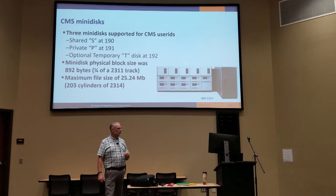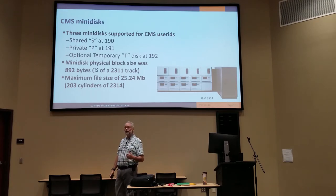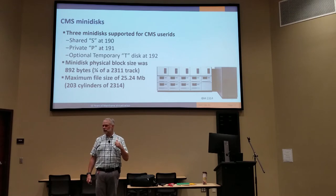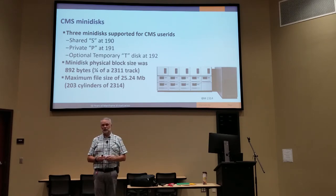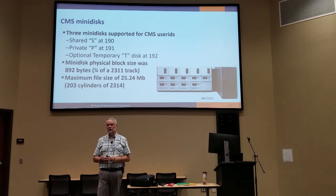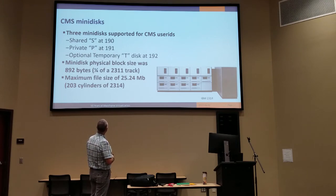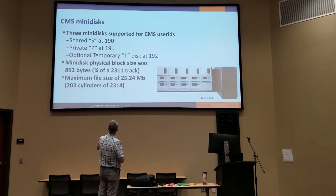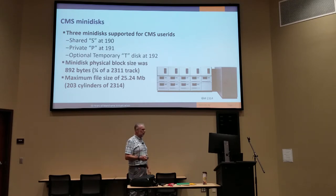When we added accounting into VM, it punched the accounting cards into the middle hopper of the 2540. The punch was on the left, the reader was on the right, and all of a sudden a card would drop into the middle hopper when everybody logged off — that's how accounting records were done. Physical block size was 892 bytes, which seems weird, but it was one quarter of a 2311 track. A 2311 was seven and a quarter megabytes. We had six 2311 drives on the CP67 machine. You could also use 2314s at 28 megabytes.